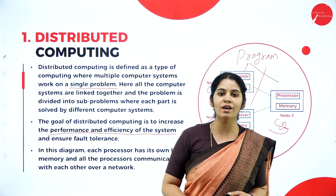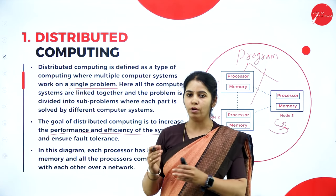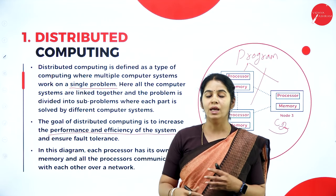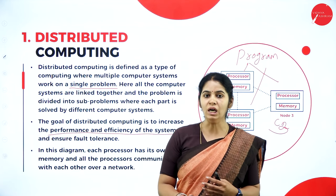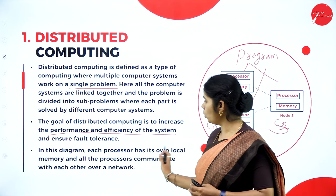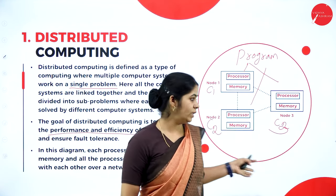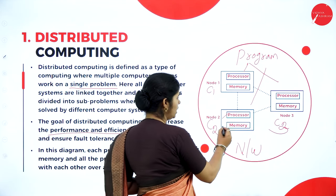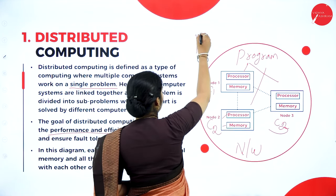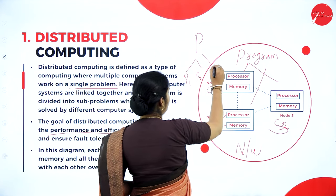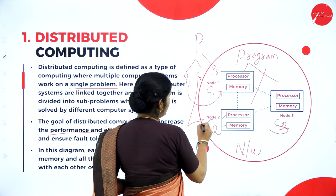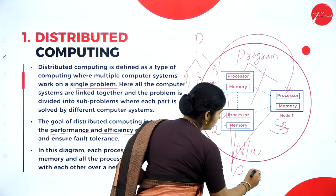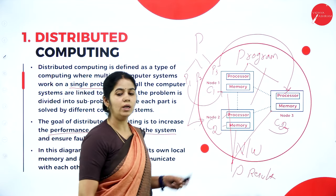The goal of distributed computing is to increase the performance and efficiency of the system. When we divide a big problem into a number of small problems, and the small problems are computed by different computers, and the results are combined together, the time required is less — thus improving efficiency. In this diagram, each processor has its own local memory and all processors communicate with each other over the network. A program P is divided into P1, P2, and P3, given to node 1, node 2, and node 3 respectively. After combining all, we get the result P.